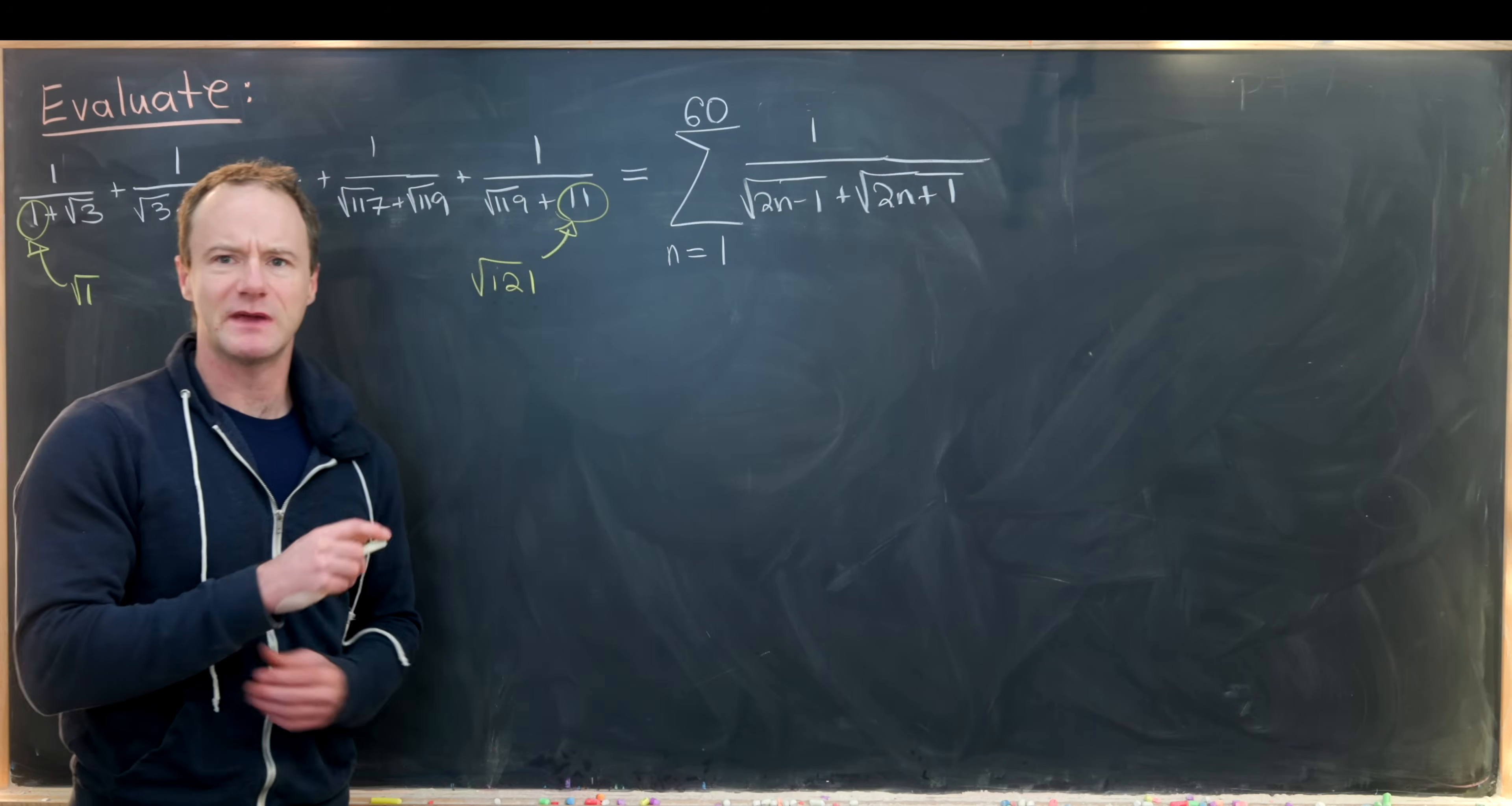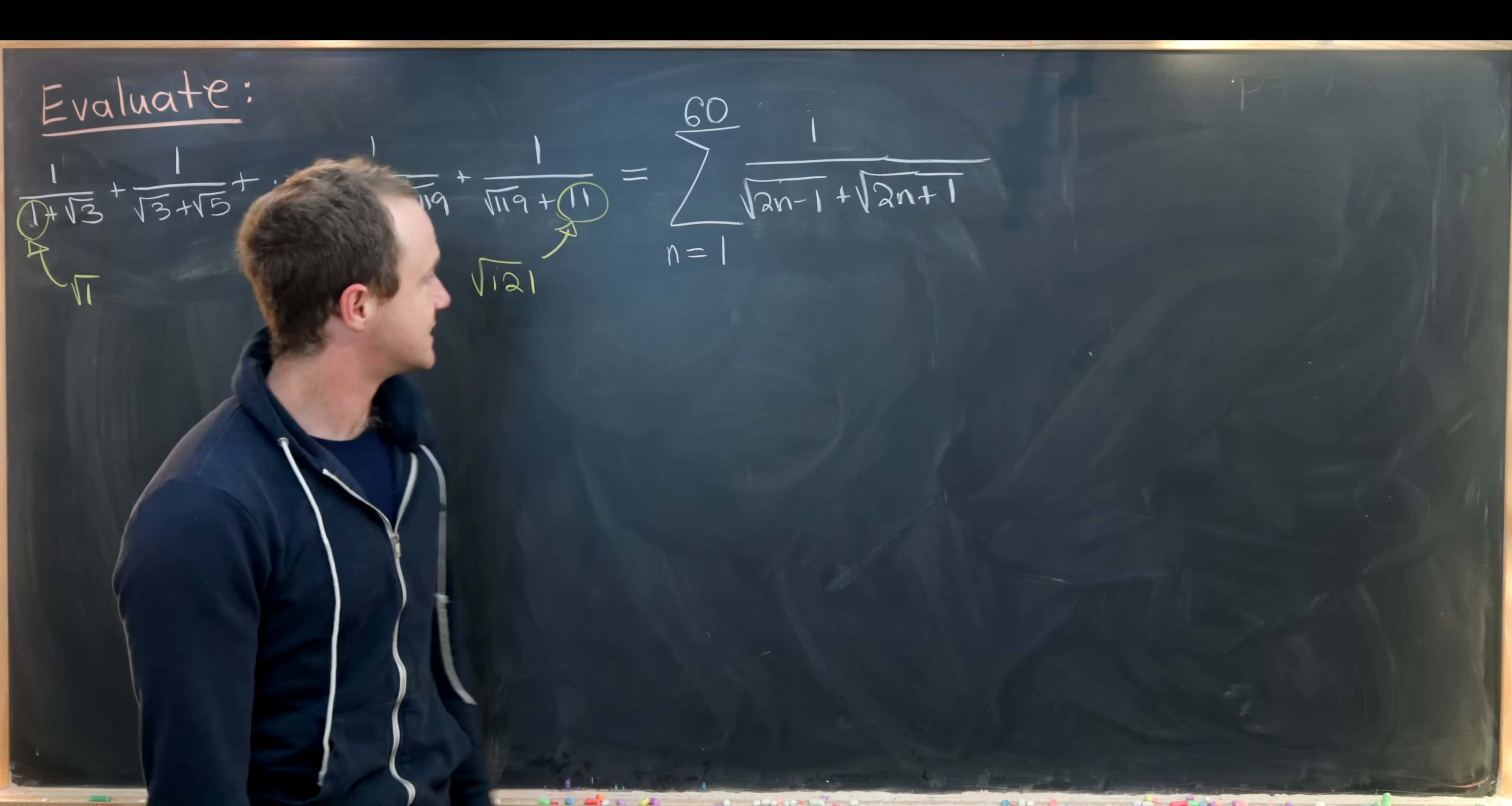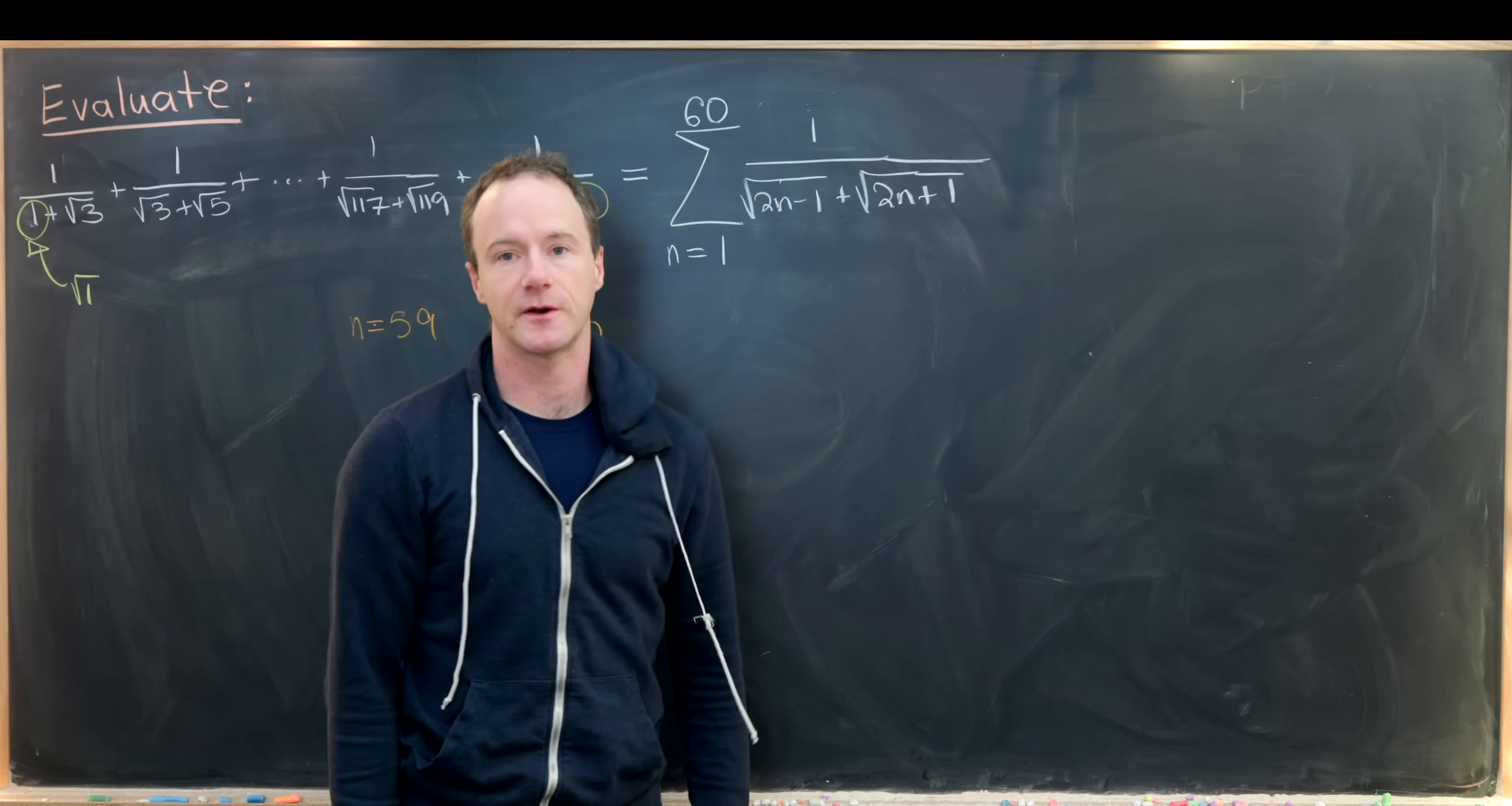Let's verify this makes sense. If n = 1, we get 1 + √3, our first term. If n = 2, we get √3 + √5, our second term. You can check that these last two terms correspond to n = 59 and n = 60, so we're good to go.